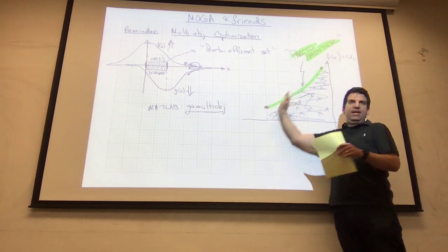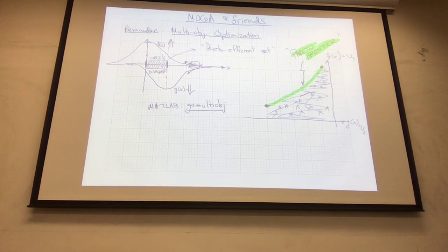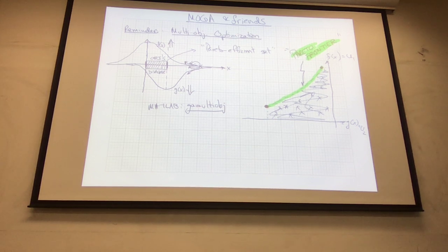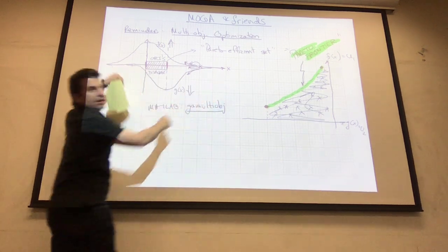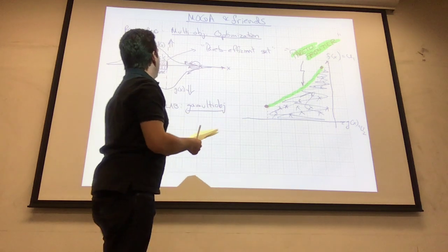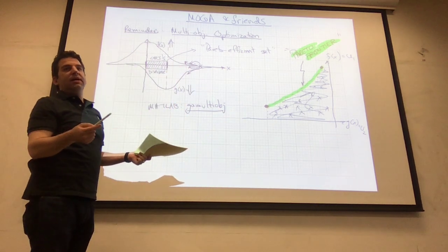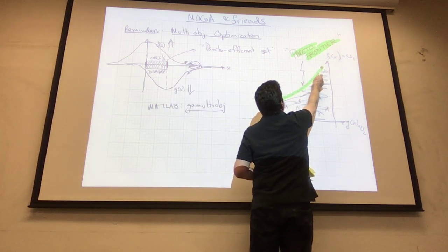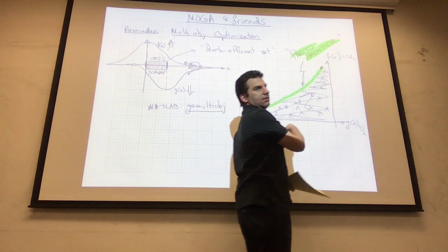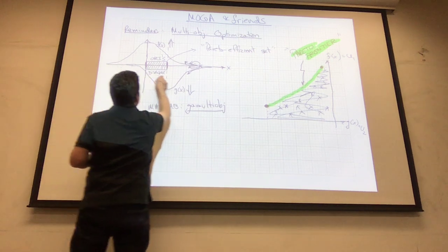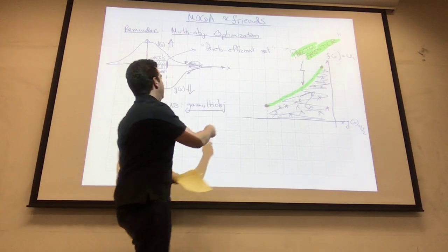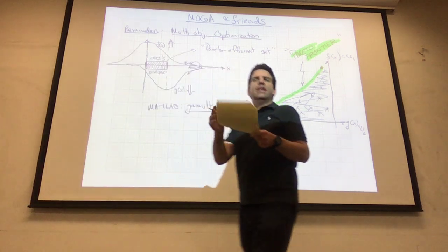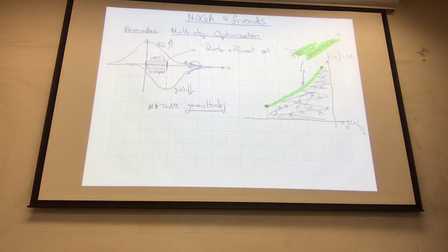Student: So everything below the Pareto frontier — those are solutions on the right side of the trade-off region? Instructor: Both these solutions are down here. There are certain combinations of f and g that just don't happen — out here there is no way to have an f this high and a g this high simultaneously. The ones on the Pareto frontier are the ones you sweep across, like a lawn mower across this region.